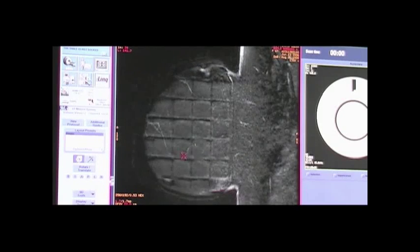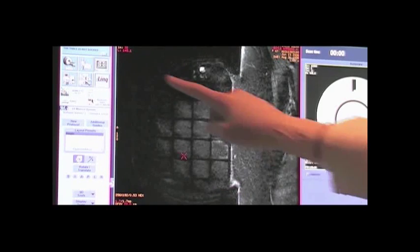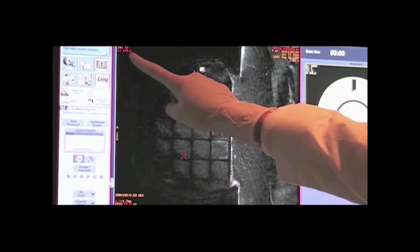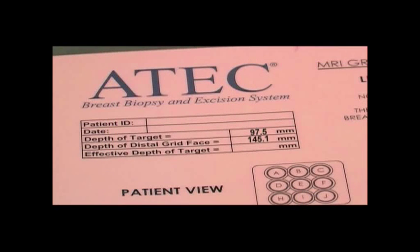Scroll back through the images to the compression grid image and record this image left or right value on the grid worksheet in the space marked depth of distal grid face. Subtract the difference between the depth of target and the depth of distal grid face. Record this measurement as the effective depth of target on the grid worksheet. You now have the Z depth for biopsy.